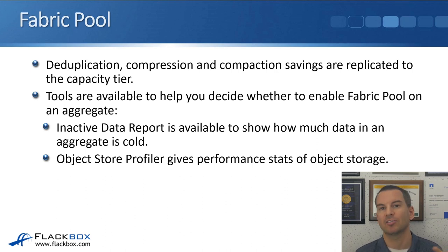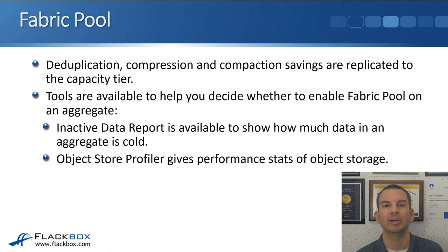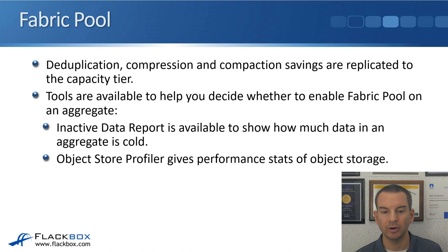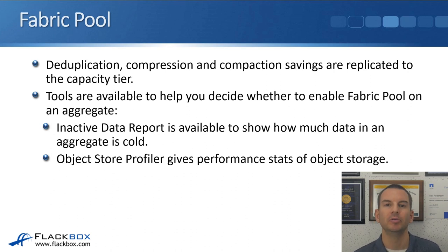Deduplication, compression, and compaction savings are replicated from the performance tier to the capacity tier if they are enabled. Tools are available to help you decide whether enabling Fabric Pool on an aggregate is a good idea. An inactive data report can be turned on to show how much data in an aggregate is cold — if there's a lot of cold data, that aggregate is a good candidate for enabling Fabric Pool.